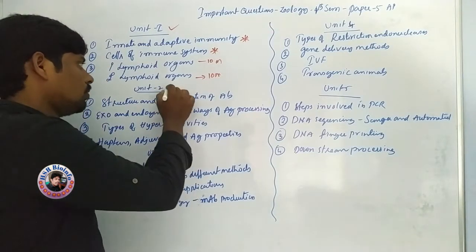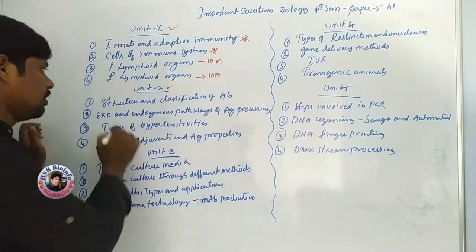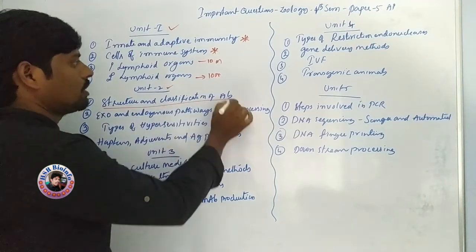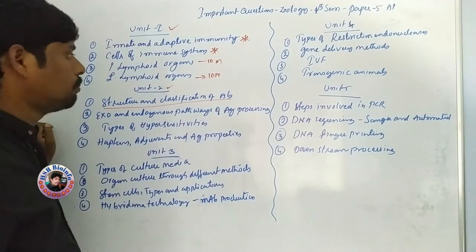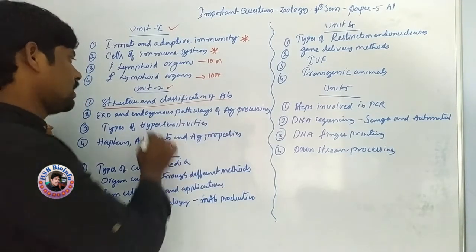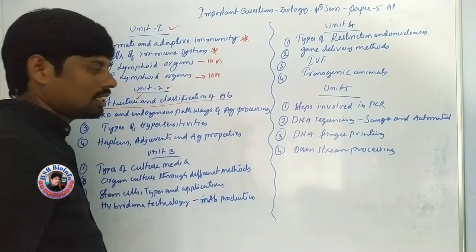Coming to Unit 2. First important question: structure and classification of antibodies — very very important. Structure of antibody — 5 marks.